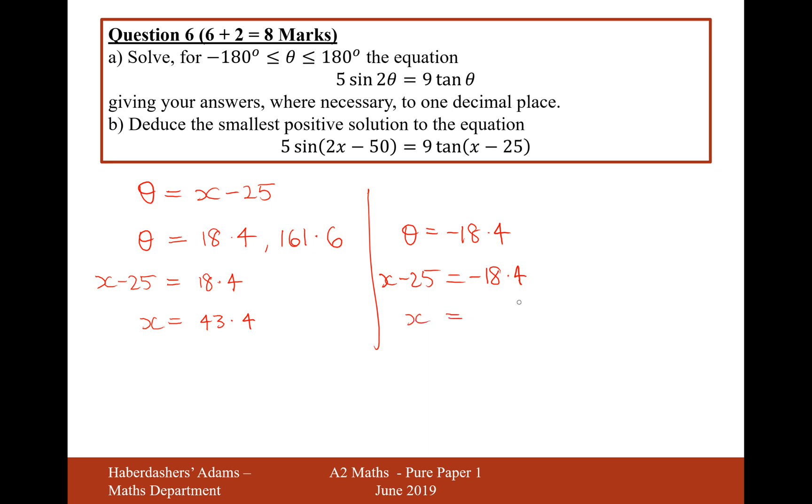So if I now add 25 onto the other side, so if I select that answer and then add 25, I get 6.6. So both of those are correct solutions to this initial equation here, but the smallest positive one will be this 6.6 answer here.